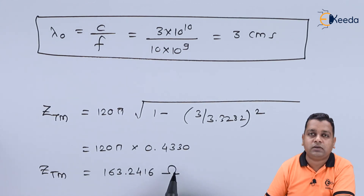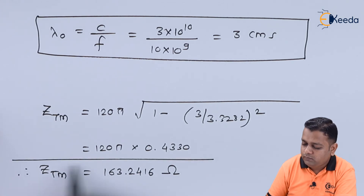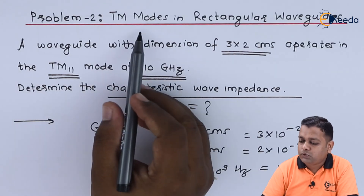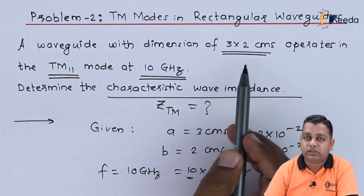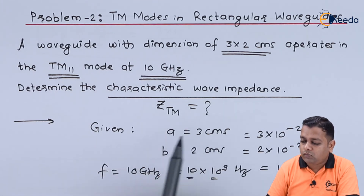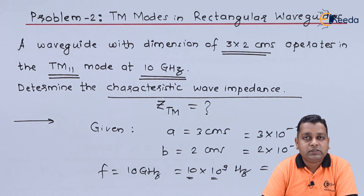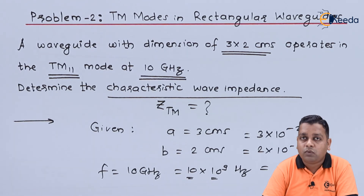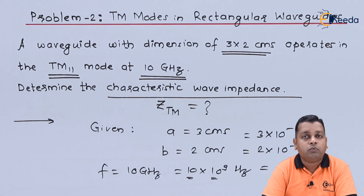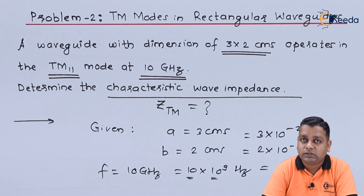As it is an impedance, it is measured in ohms in the SI system. This is the final answer for problem number two, which was based on TM modes in rectangular waveguides — given internal dimensions, operating frequency, and mode of propagation, the characteristic wave impedance is determined. In the next lecture, we shall address power transmission along with some losses in the rectangular waveguide. Thank you.